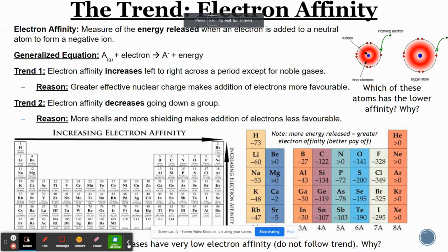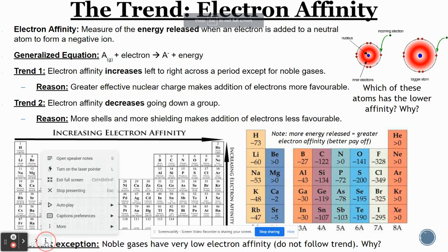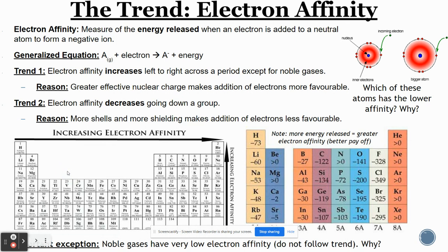In this video, we're going to take a look at another trend called the electron affinity trend. Electron affinity is defined as the amount of energy that's released when an electron is added to a neutral atom to form a negative ion.